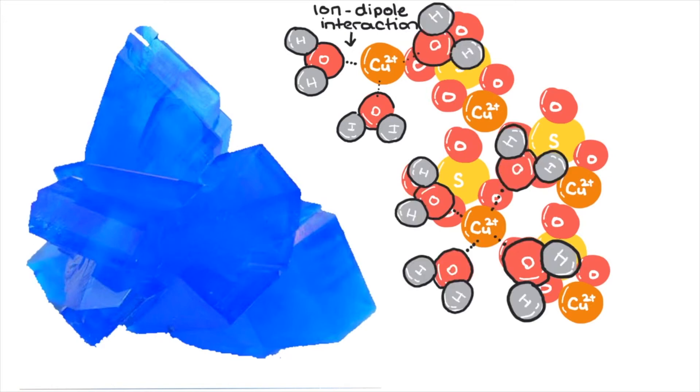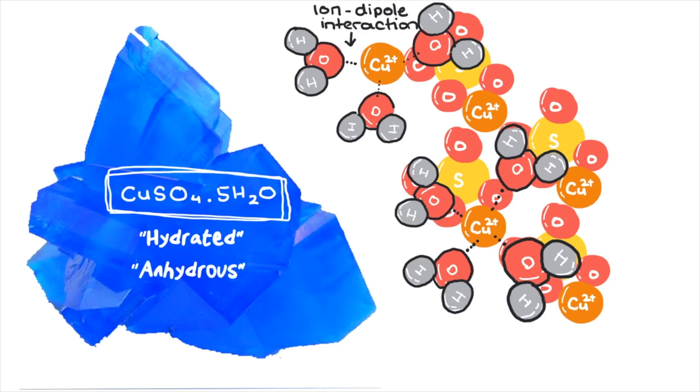This is why you often see copper sulfate expressed this way: for every molecule of copper sulfate, there are five water molecules attached. This is known as hydrated copper sulfate. If there are no water molecules within the structure, it's known as anhydrous.